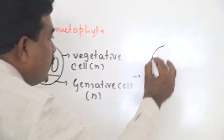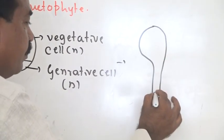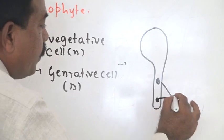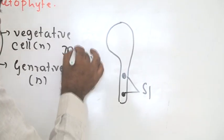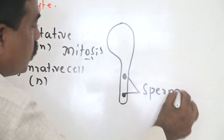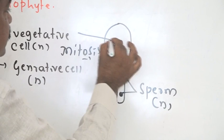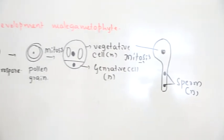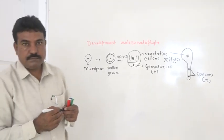The generative cell undergoes mitosis once again and produces two haploid sperms. This is the development of the male gametophyte.